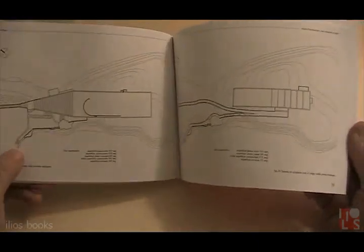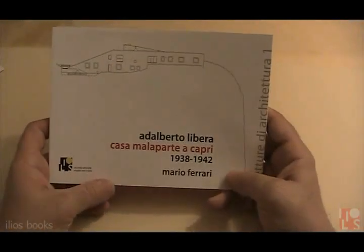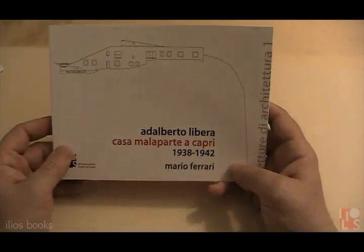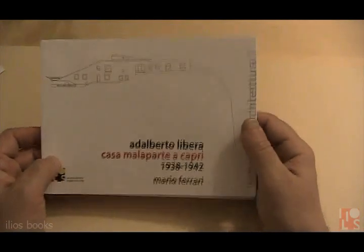For example, in this case, Casa Malaparte in Capri is a project made by Adalberto Libera, an Italian rationalist architect.